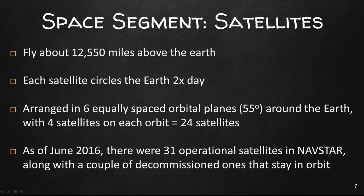The satellites are arranged in six equally spaced orbital planes, tilted 55 degrees from the equator, with four satellites in each orbital plane. As of June 2016, there are 31 operational satellites in NAVSTAR, along with a couple of decommissioned ones that remain in orbit. That is the space segment.